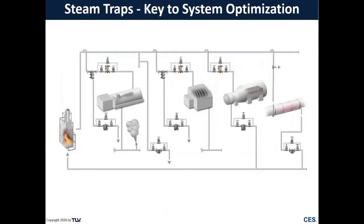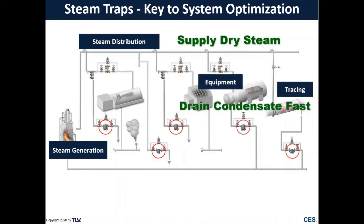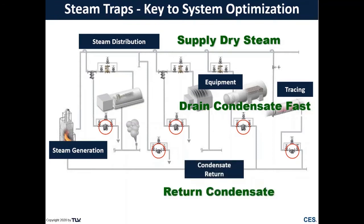So why are we talking about steam traps? If we look at a steam system, steam traps are really one of the keys to optimizing it. We have our steam generation and steam distribution, and the goal is to supply dry steam to our process for optimal production — draining condensate from turbines, heat exchangers, and tracing as quickly as possible to maximize efficiency and return condensate for energy savings.